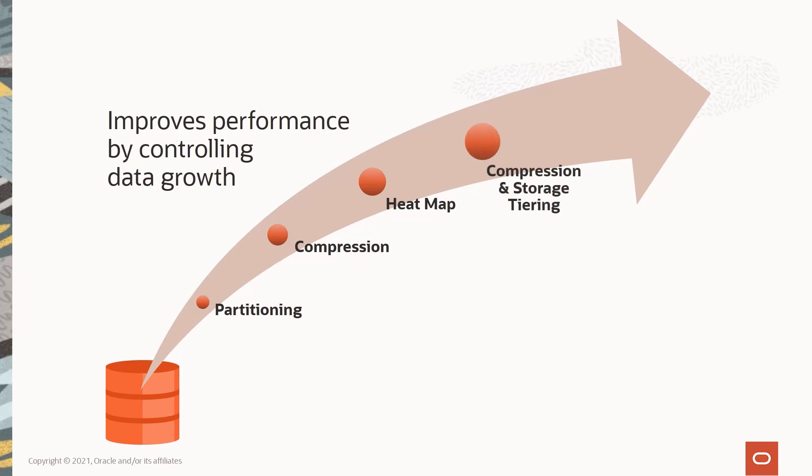Compression and storage tiering enables us to apply different levels of compression and to move data to different storage tiers according to usage and performance needs. This is based on our heatmap technology.